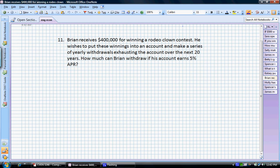He wishes to put these winnings into an account and then make a series of yearly withdrawals that exhaust the account over the next 20 years. Brian's wondering, how much can he withdraw if his account earns 5% APR?